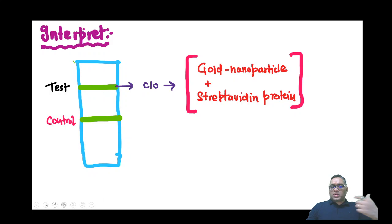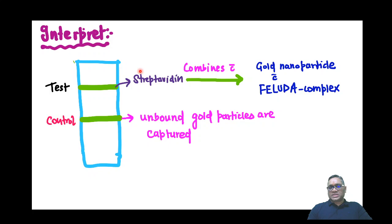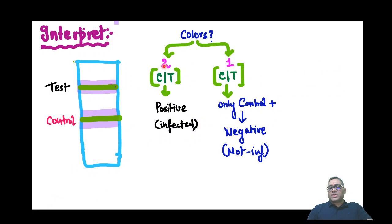For interpretation: the streptavidin on the test strip will combine the gold nanoparticle with the Feluda complex. When they combine, the test strip becomes positive — meaning it shows color. The unbound gold particles will be captured in the control area. So if we see two colors — both test and control are positive — that means the patient is infected.